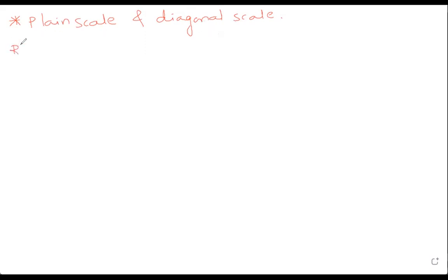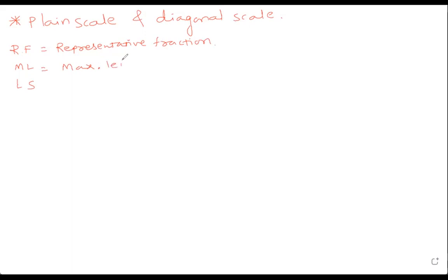RF is Representative Fraction. ML is Maximum Length — the maximum length required for your sum. Length of Scale (LS) is how much you want to draw. We need to focus on only these three things.